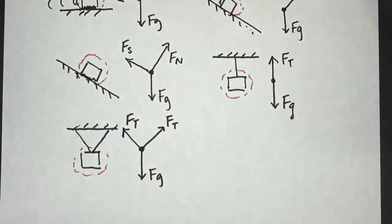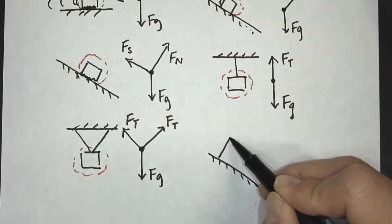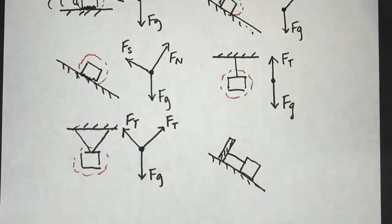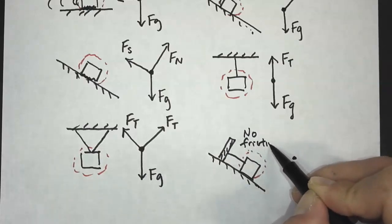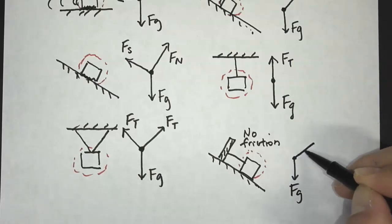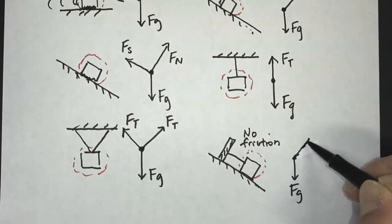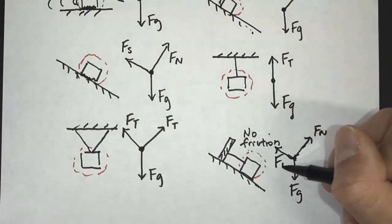We can also have a tension force and a normal force together. Let's say we have a ramp with a box and a string, and this object is motionless. Here is our system boundary. Assuming no friction, the forces are: gravity force down, normal force at 90 degrees to the surface, and tension force along the surface — Ft — because there's a string there.